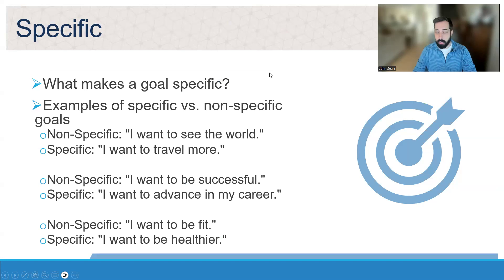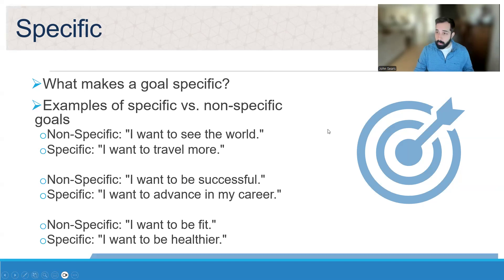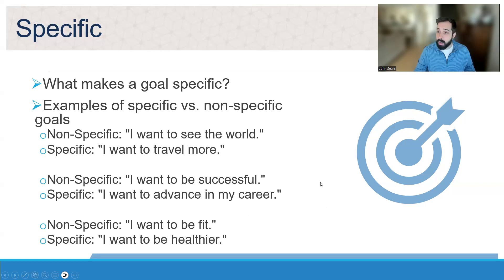First: Specific. A good goal is specific — whenever possible you want to try and be as specific as possible with your goal because it makes it more easily understandable, comprehensible, and helps it be achieved. Some examples: a non-specific goal might be 'I want to see the world'; specific is 'I want to travel more.' Non-specific: 'I want to be more successful'; specific: 'I want to advance in my career.'